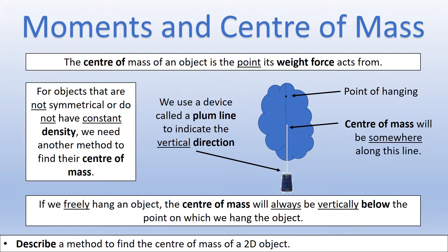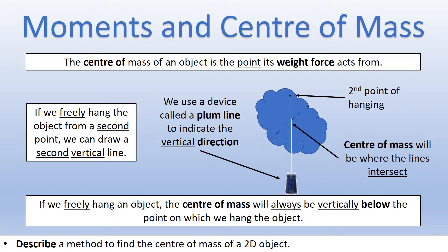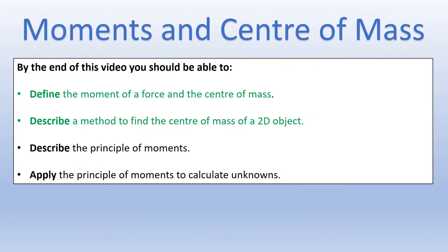Next, we hang the object from a different part so we can draw a second line. You can see the original line drawn from the first point of hanging, and now we draw a second line using our plumb line, because we know the center of mass lies along that line too. The point where those two lines intersect tells us where the center of mass is. In books, a 2D object like this is sometimes described as a lamina. That's how we find the center of mass.